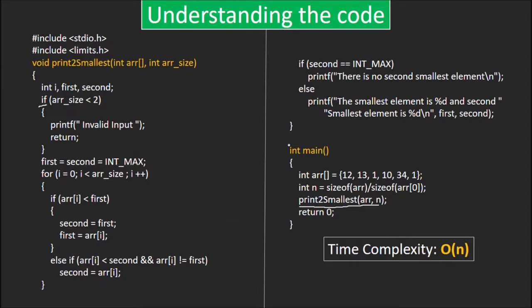At the end, we check if the second element is still infinite. If so, we say that the array has no second smallest element. Otherwise, we print both first and second.